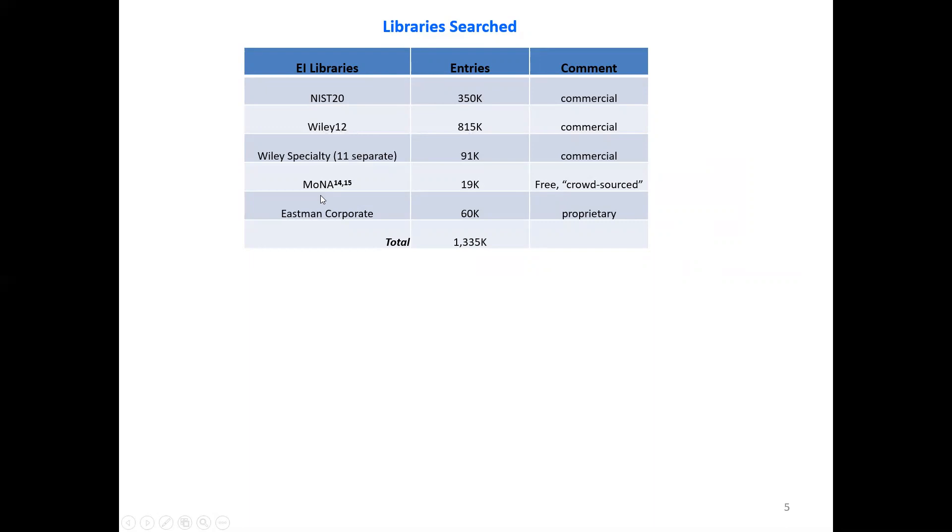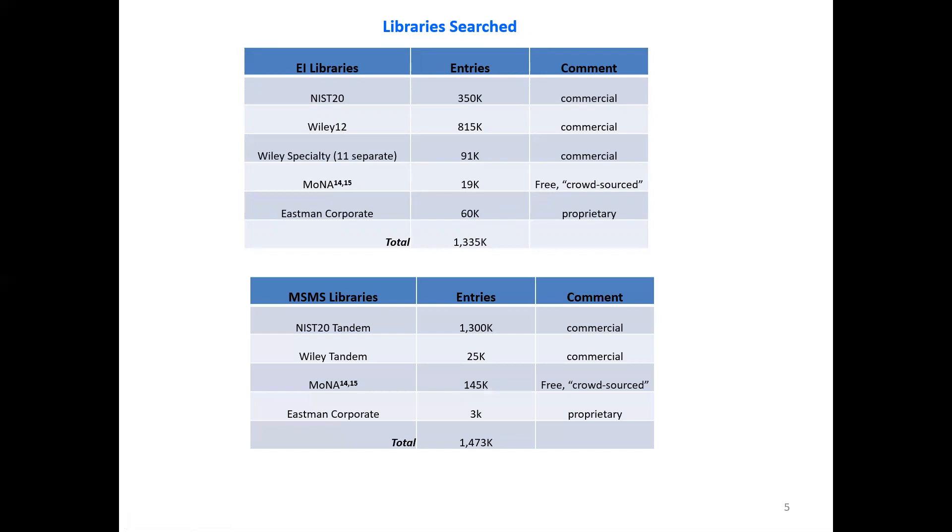The Mona database, this is a free library that's crowdsourced, costs nothing, you can download. And then there's our Eastman corporate library of about 60,000 entries of proprietary entries that we've added. And even though that's fairly small, it's a very critical part of our operation because it contains things that are not in these other libraries. For a total of about 1.3 million that you can search.